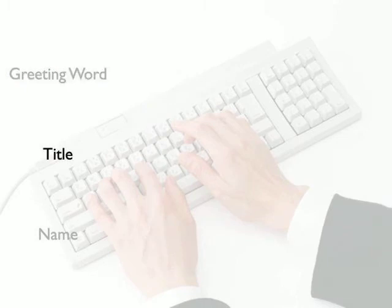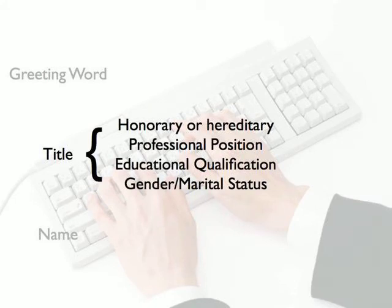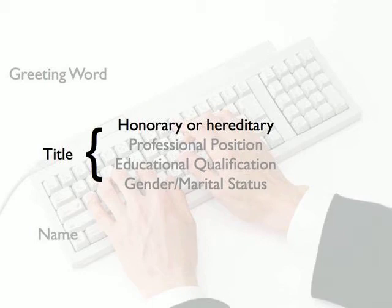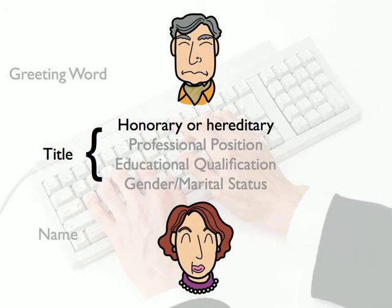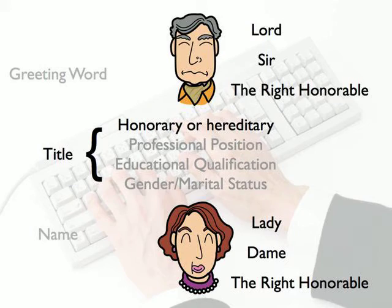Next, let's move on to the person's title. Getting a person's title right is important. There are four types of title: a title indicating an honor or hereditary position, a title indicating professional position, a title indicating educational qualifications, and a title indicating gender and/or marital status. The first type — honor or hereditary titles such as Lord, Lady, Sir, Dame, or The Right Honourable — is quite rare, so let's concentrate on the cases you will most likely encounter.